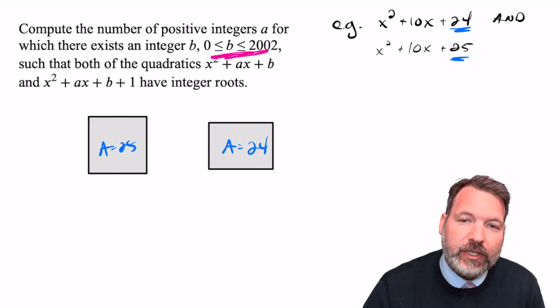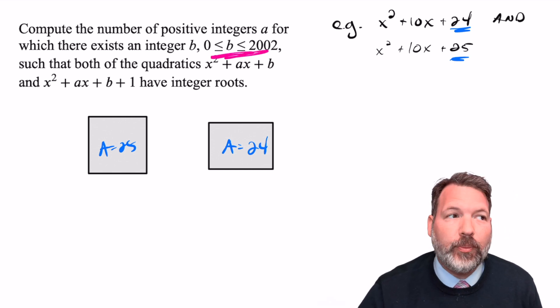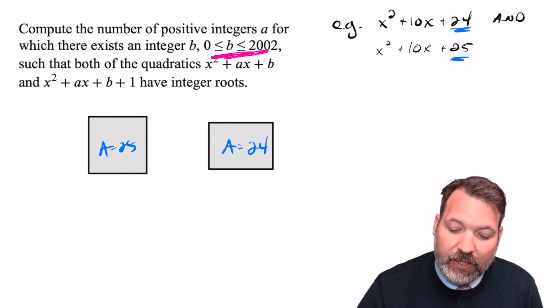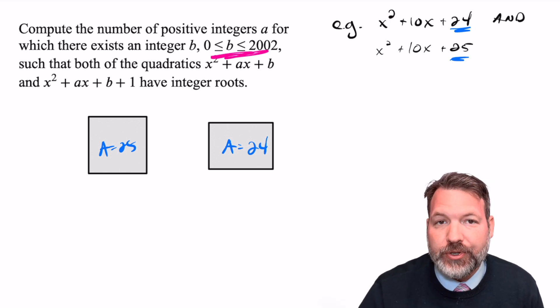The question now is not, can we come up with more examples, but can we make sure we come up with all possible examples, given that constant term has to be less than or equal to 2002.